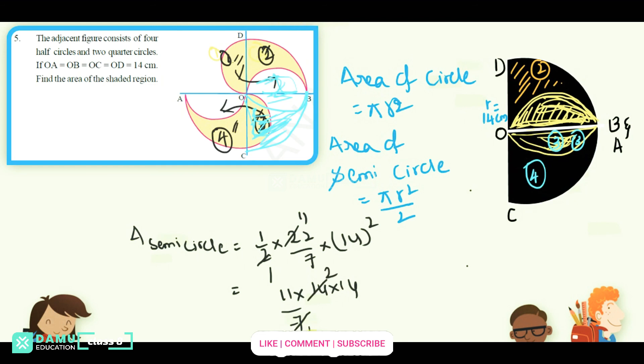So, 2 and 1 cancel, 2 and 11. So, 11 × 14 × 14 / 7. 7 and 1 cancel, 7 and 2 are 14. So, 11 × 4 is 28. 11 × 28, what you will get here is 11 × 28.